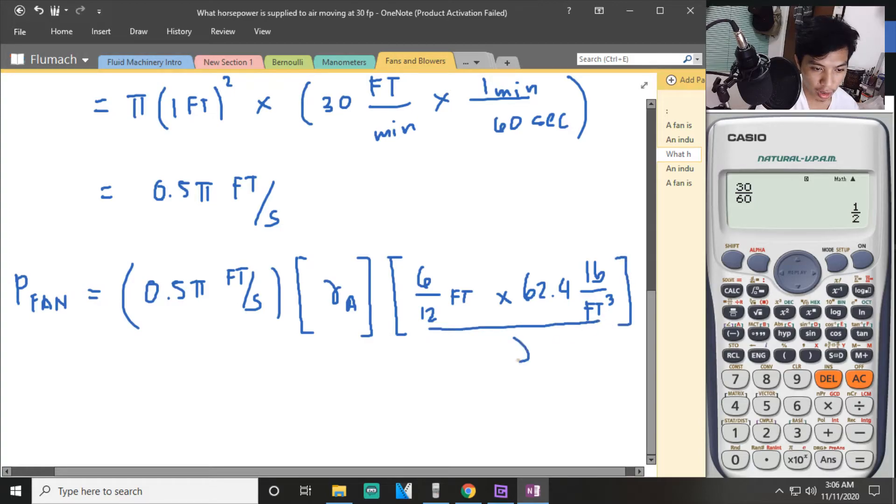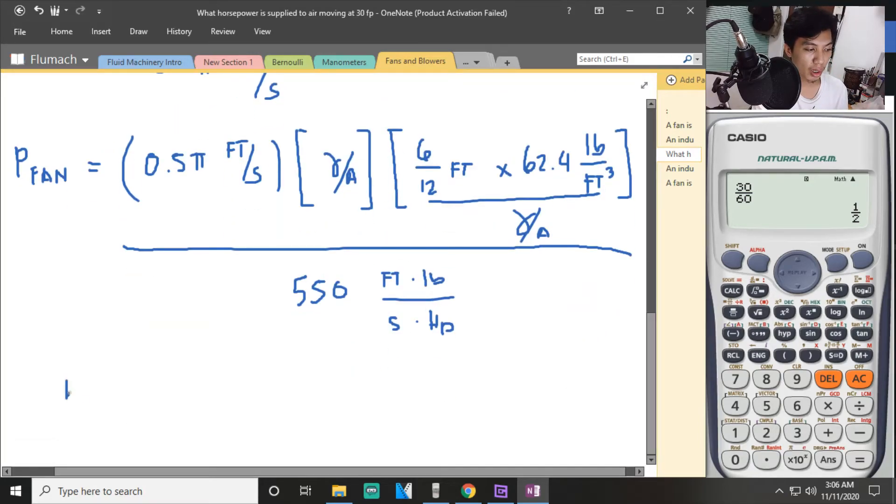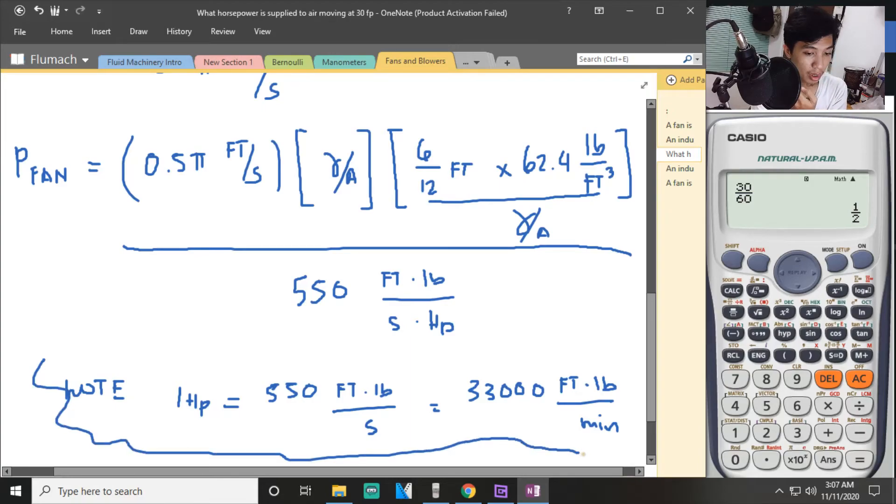Divide this here. Cancel, cancel. What comes out here is in pound-feet per second. Now what is the conversion unit? When it's per second, you divide by 550 feet-pound per second per HP. Note that 1 HP equals 550 feet-pound per second, equal to 33,000 feet-pound per minute. Don't forget about this conversion. We can now solve. Cancel the feet, the pound, the second.